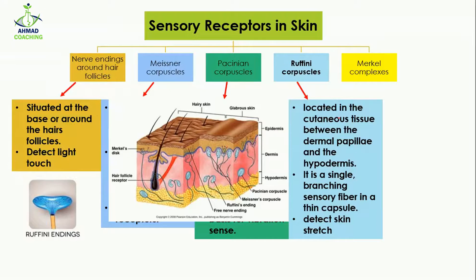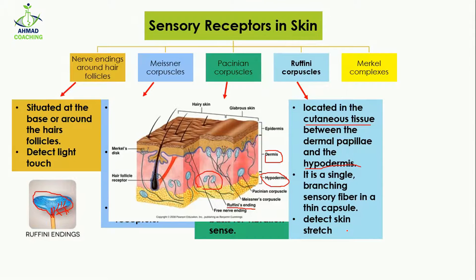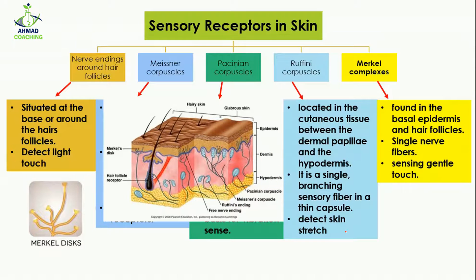Ruffini's corpuscles are located in the cutaneous tissues between the dermal papillae and the hypodermis. They consist of a single branching sensory fiber present in a thin capsule. As you can see here, this single sensory nerve fiber branches more and more. Their function is to detect skin stretch.